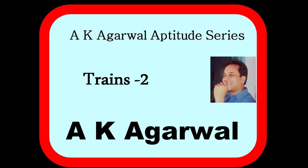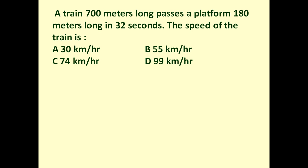Hello friends and welcome to AK Agrawal aptitude series. In this session we are going to learn a technique for solving a problem on trains. The given problem is: a train 700 meters long passes a platform 180 meters long in 32 seconds. The length of the train is 700 meters and the length of the platform is 180 meters. What will be the speed of the train if it crosses the platform in 32 seconds?